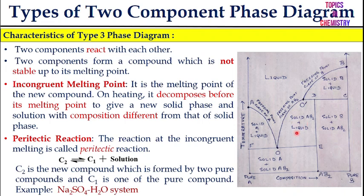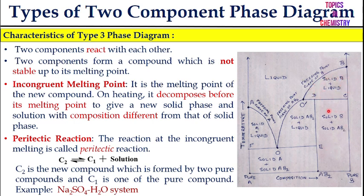In the Type 3 phase diagram — again temperature versus composition — A and B react to form compound AB₂, whose melting point is the incongruent melting point. The regions are: solid A + liquid, solid AB₂ + liquid, solid B + liquid, solid A + solid AB₂, and solid B. The freezing point curves of A, AB₂, and B are shown, with the upper region representing all liquid.